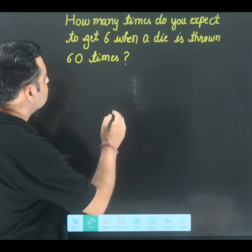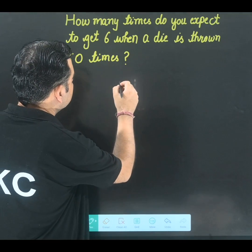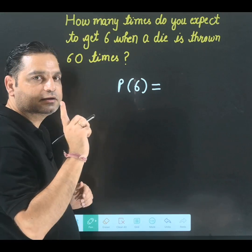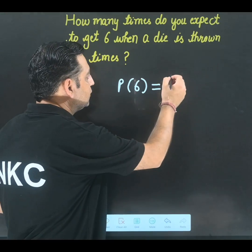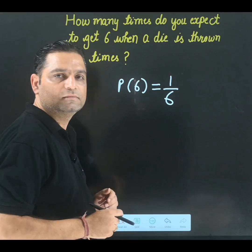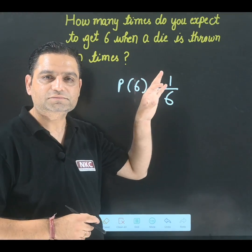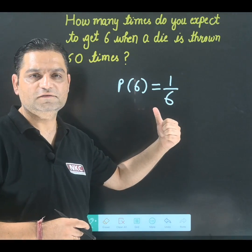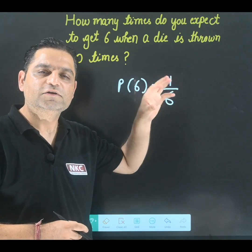For example, first of all we know that what is the probability of 6 to come when a single die is thrown. We know that it is 1 over 6, right? That means there is 1 sixth chances are there for 6 to come.